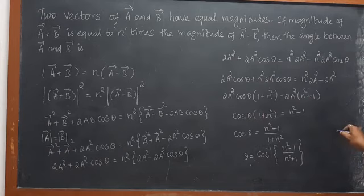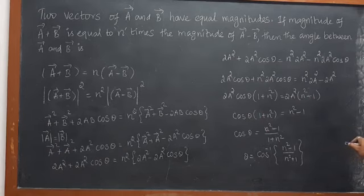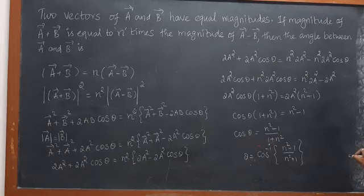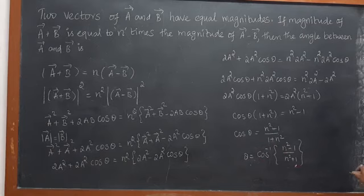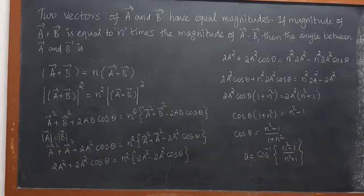Therefore, cosθ equals n squared minus 1 divided by 1 plus n squared. So theta is equal to cos inverse of n squared minus 1 divided by n squared plus 1. This is the angle between A vector and B vector. I hope you understand well. Thank you, see you in the next video.